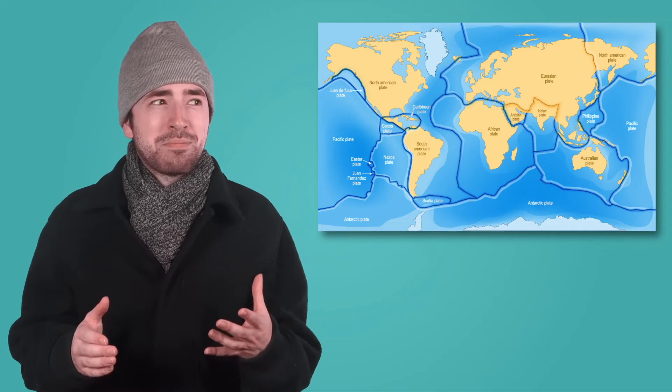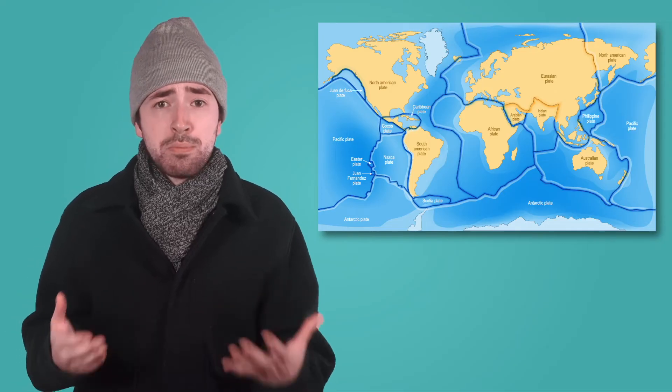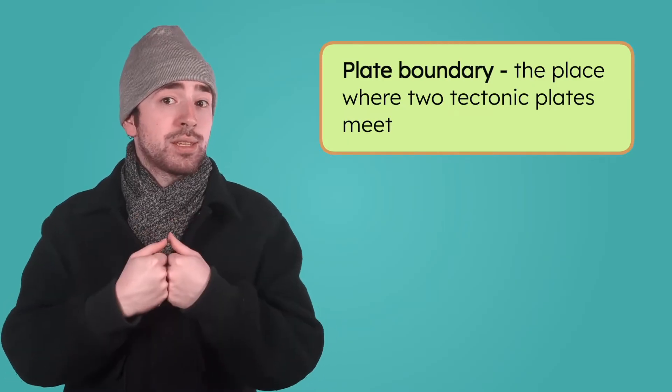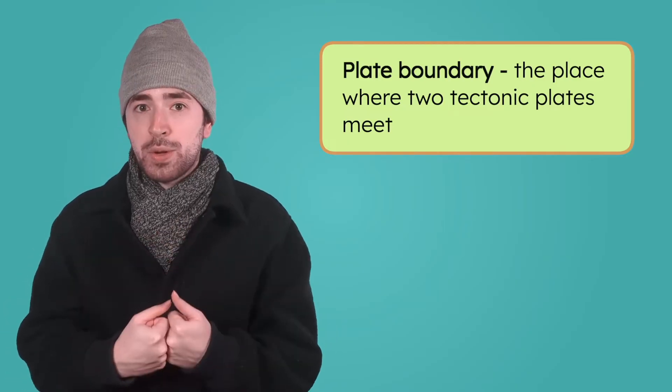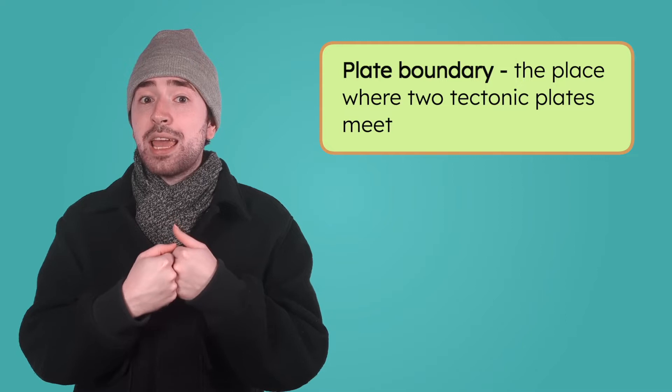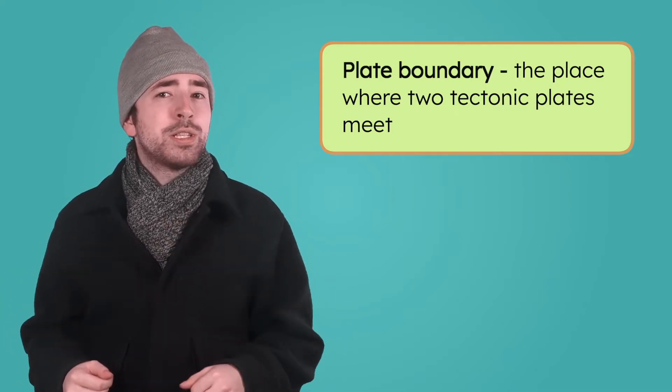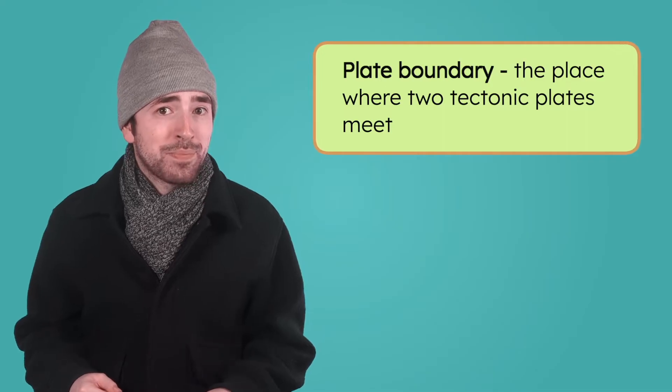But what does that mean — how the plates move? Well, we know that the place where two plates meet is called a plate boundary. The plates that meet at a boundary are both moving, but they aren't always moving in the same direction. Let's pretend that my hands are tectonic plates. Feel free to join me if you can. If we hold out our hands flat like tectonic plates, what are some ways they could move?